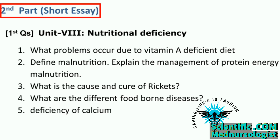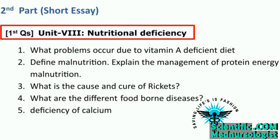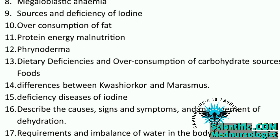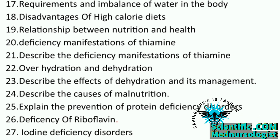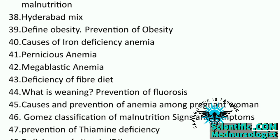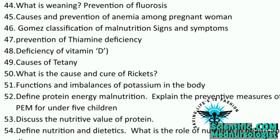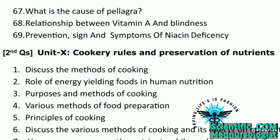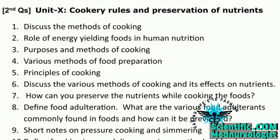The short essay part consists of three standard questions, and all of these three standard questions will be asked in your degree examination. Our first standard question is Unit 8, that is Nutrition Deficiency, which consists of two ordinary questions out of all possible ordinary questions in this unit. Our second standard question consists of Unit 10, that is Cookery Rules and Preservation of Nutrients.